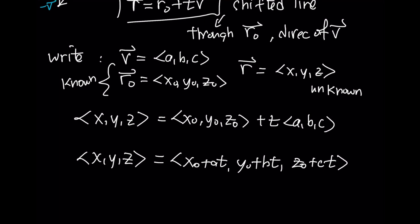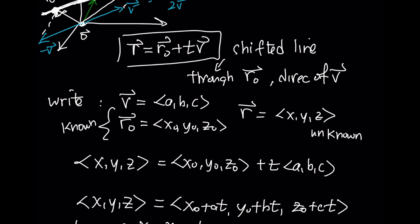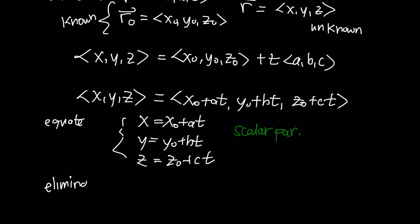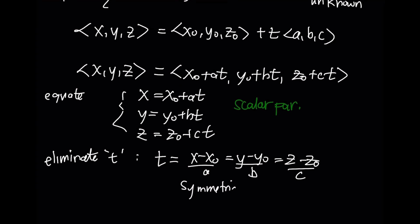If we equate the components, we find the scalar parametric equations: X equals X0 plus AT, Y equals Y0 plus BT, and Z equals Z0 plus CT. The vector equation R = R0 + tV is called the vector parametric form — it's a vector form because it contains vectors and parametric because it's in terms of T. The scalar parametric forms are these three component equations. We can also eliminate the parameter T by solving each equation for T, yielding the symmetric forms of the equation of a line. The symmetric forms are not very important or useful, but we include them for completeness.